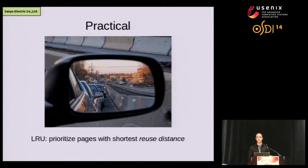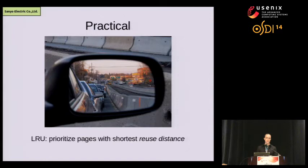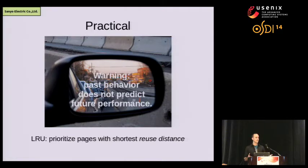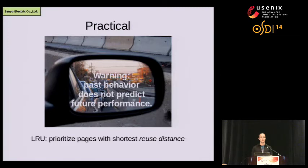This is a very common technique in storage systems: to use a cache replacement policy like LRU — least recently used — or some derivative of it. The idea is that we'll keep pages with the shortest reuse distance; that is, pages that have been used most recently in the past in fast memory, hoping that we'll need to use them again. This doesn't always work, and there are well-known workloads that perform quite poorly under this replacement policy. But it's dead simple to implement and relatively robust across workloads, so it's quite common in today's systems.